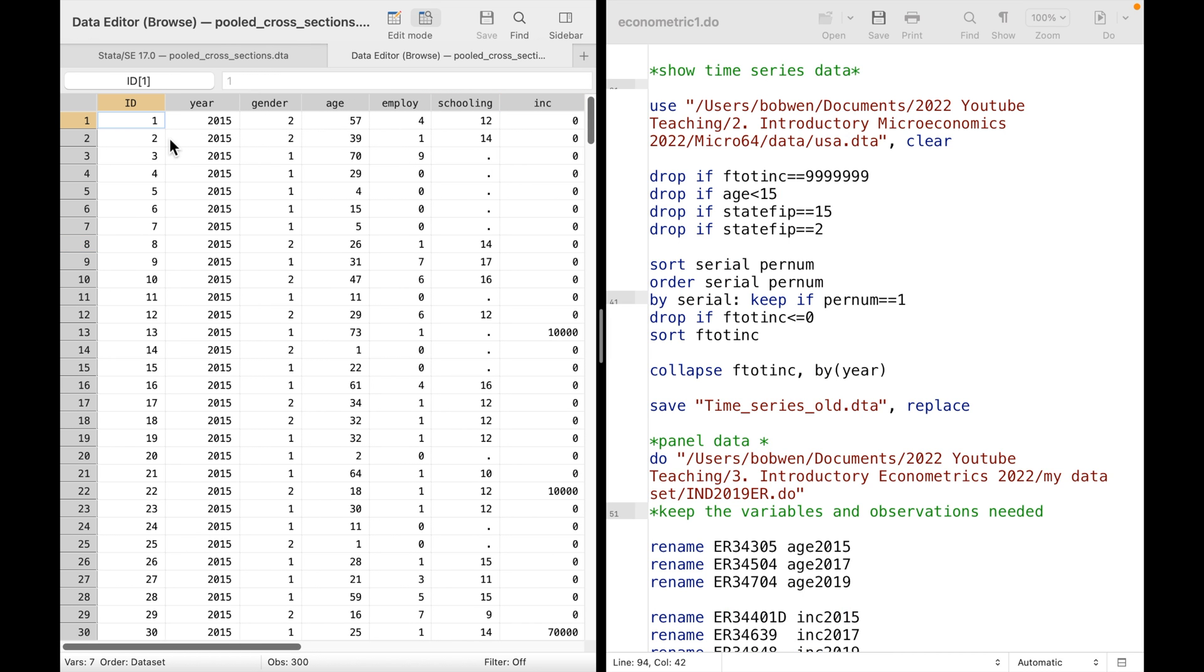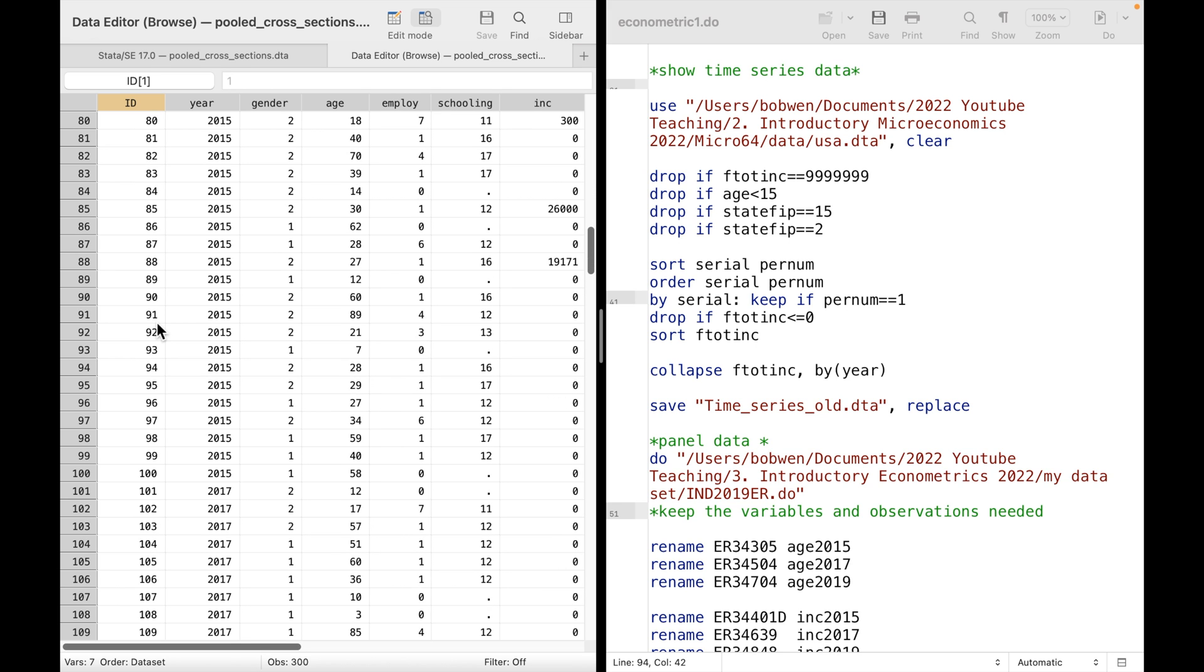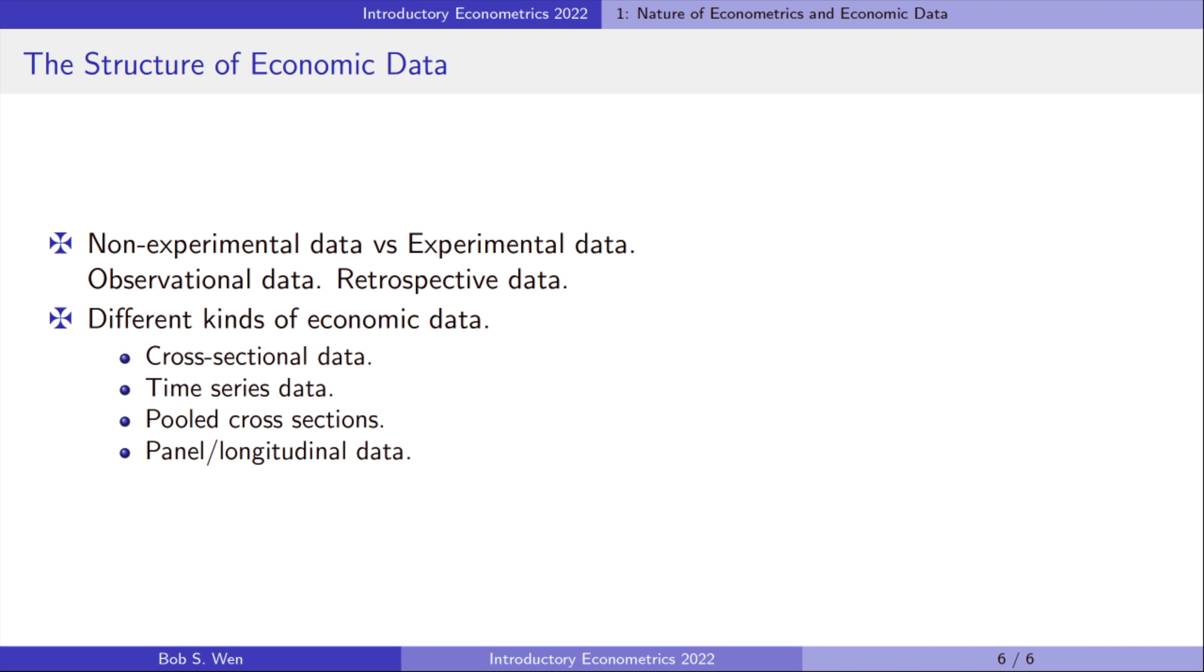By contrast, the pooled cross-sections consists of multiple years of data from different individuals. Here are the pooled cross-sections. People with ID 1 to 100 participated in the 2015 survey. Another group of people took part in the 2017 survey. The individual surveyed in 2015 only appeared once and did not participate in the 2017 survey. The above are the four main types of economic data. We will encounter all of them in this course.